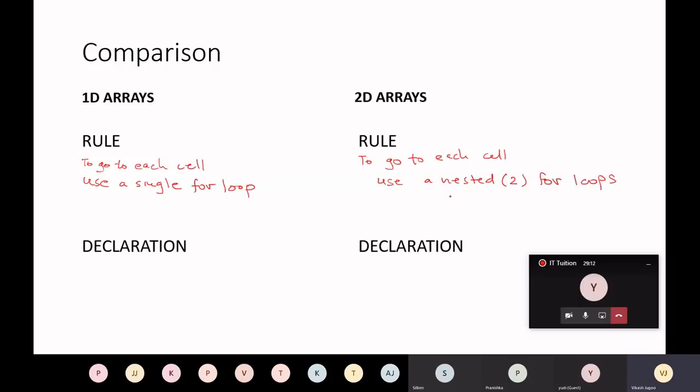By the way, when you nest, you could have three for loops, or four for loops nested. Nesting just means one inside of the other. But in this case, with the 2D array, I'm referring specifically that we use two nested for loops.